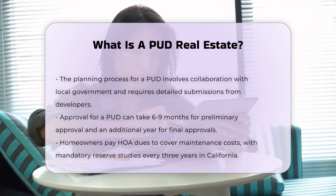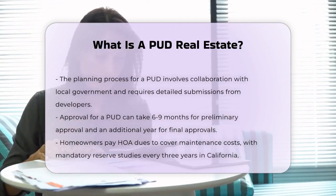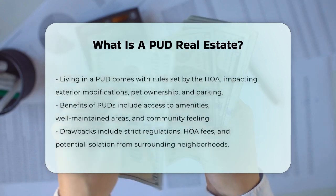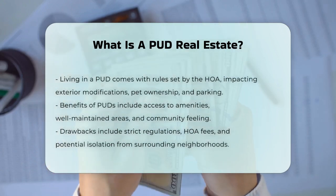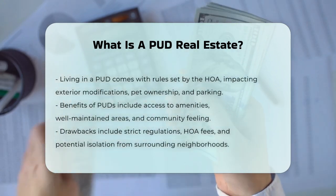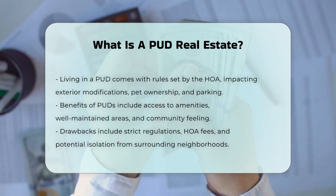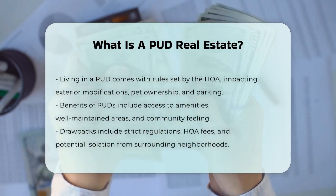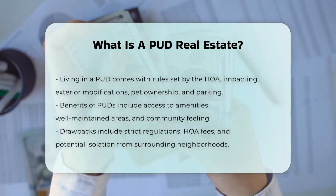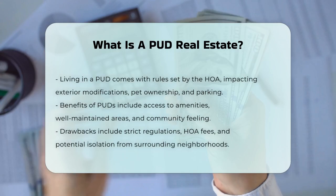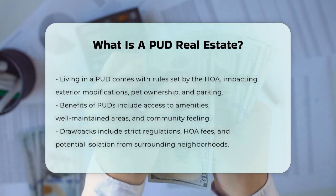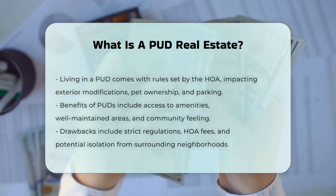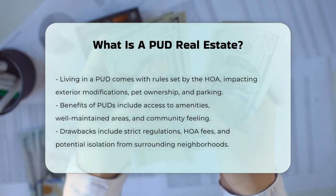Restrictions and guidelines. Living in a PUD comes with certain rules and guidelines set by the HOA. These can include restrictions on exterior modifications to homes, pet ownership, and parking. While these rules help maintain property values, they can also limit the homeowner's autonomy.